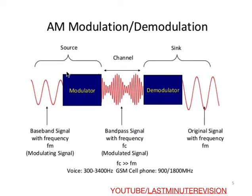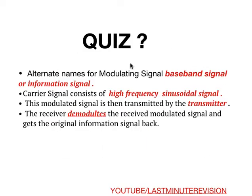As you can see, this is the source and this is the sink — the sink is where all the collection takes place. This is the baseband signal FM, where modulation takes place along with the carrier. It is represented by FC. The modulating signal and carrier signal combined give the modulated signal FC, where FC is much greater than FM. After passing through the demodulator you get the original signal back.